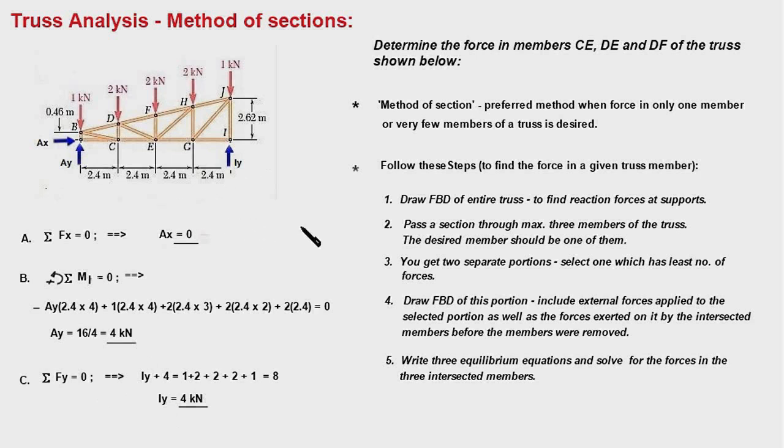Next we pass a section through maximum three members of the truss and the desired member should be one of them. So here we want to find out the internal force in members CE, DE, and DF, so we should pass a section like this which divides the entire truss into two parts. This section cuts the members CE, DE, and when we cut these members we expose the internal forces of the members DF, DE, and CE.